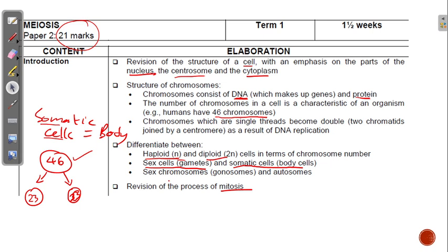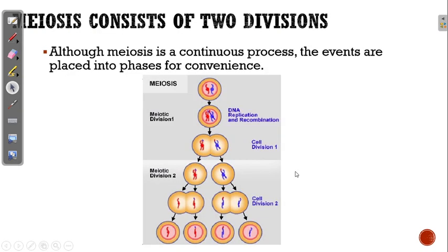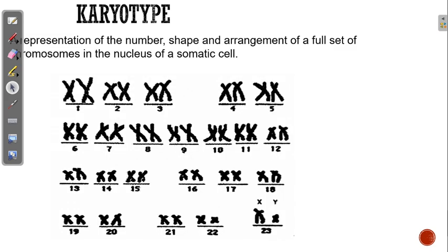We also need to talk about sex chromosomes — called gonosomes — and autosomes. Meiosis is divided into meiosis I and meiosis II. There is a break after meiosis I before meiosis II, which is the second division.